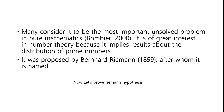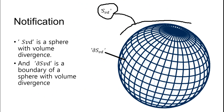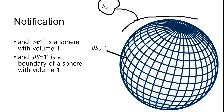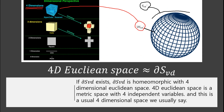Now let's prove the Riemann hypothesis. Main Results: Dimension of a sphere with volume divergence. F3D is a sphere with volume divergence, and DS3D is a boundary of a sphere with volume divergence. FV1 is a sphere with volume 1, and DS3D is a boundary of a sphere with volume 1. If DS3D exists, DS3D is homeomorphic with 4-dimensional Euclidean space.